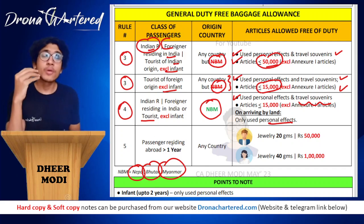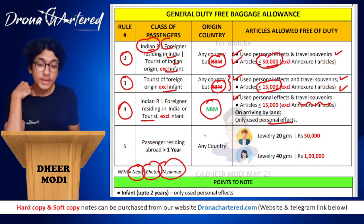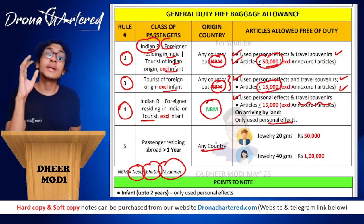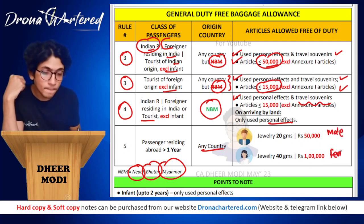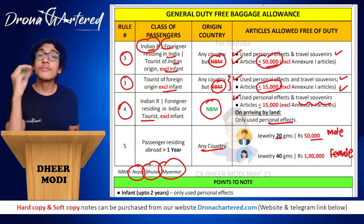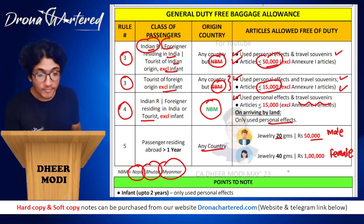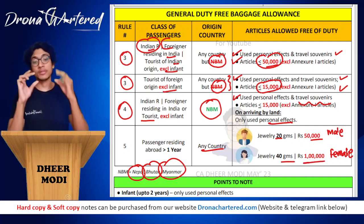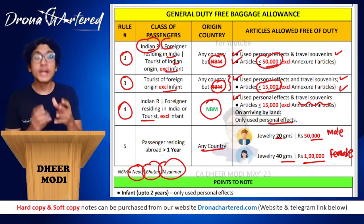For any passenger residing abroad for a period of more than one year, from any country, they are allowed to bring gold. For males: up to 20 grams with a cap of ₹50,000. For females: up to 40 grams with a cap of ₹1 lakh. So for females it is exactly double the male allowance. These are your general duty-free baggage allowances.